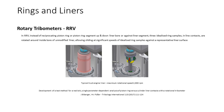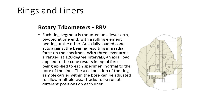In the RRV, instead of reciprocating a piston ring or ring segment up and down a cylinder liner bore or against a liner segment, three idealised ring samples in the form of line contacts are rotated against the inside of the bore of an unmodified liner. The rig thus allows sliding at constant speed of idealised ring samples against a representative liner surface. In practice, for tests using complete liners, it is preferable to have the ring sample carrier static and rotate the liner. Each ring segment is mounted on a lever arm, pivoted at one end with a rolling element bearing at the other. An axially loaded cone acts against the bearing, resulting in radial force on the specimen.